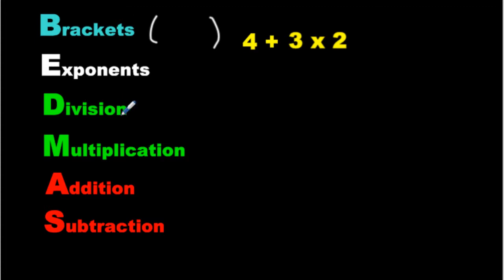Exponents, we're not going to be looking at too much. But if there are any exponents, like 2 to the power of 3, for example, you do those after the brackets. And 2 to the power of 3 is just 2 times 2 times 2. 8.